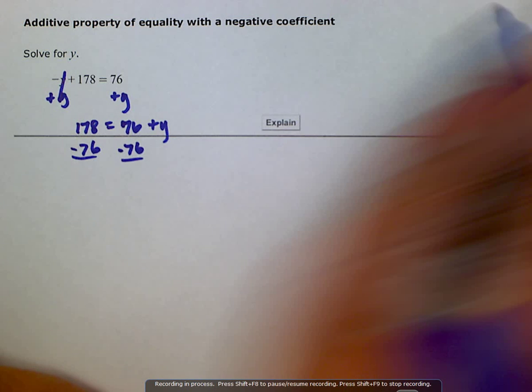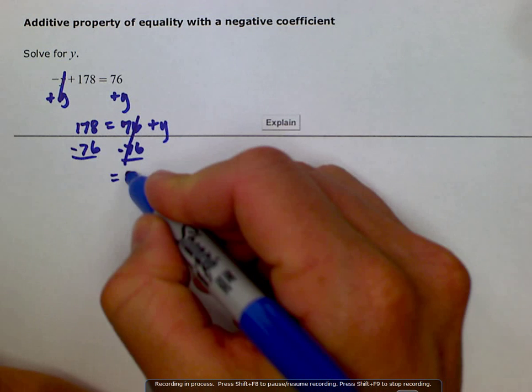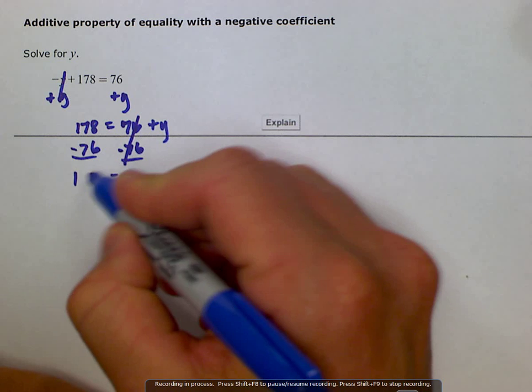That leaves us with, these cancel, leaving us with y is equal to 102. And we're done.